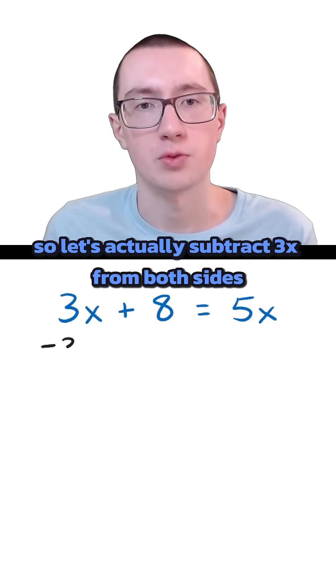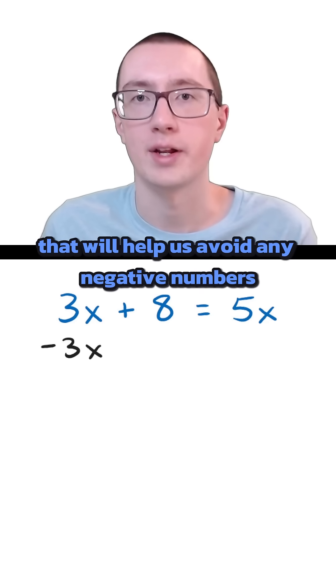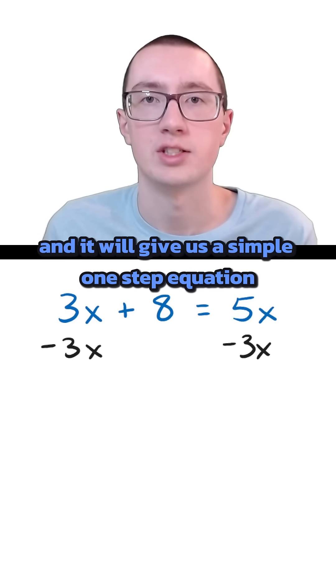So let's actually subtract 3x from both sides. That will help us avoid any negative numbers, and it will give us a simple one-step equation.